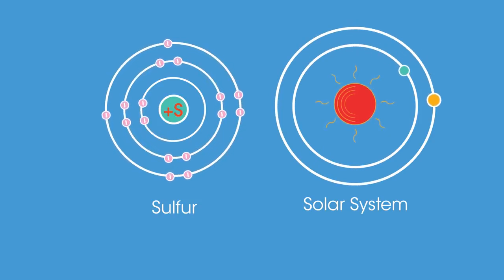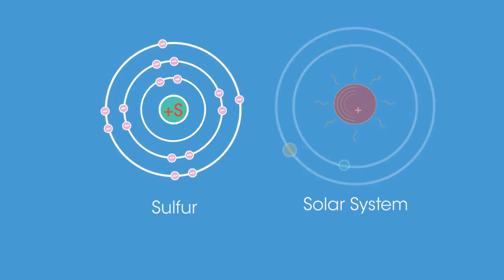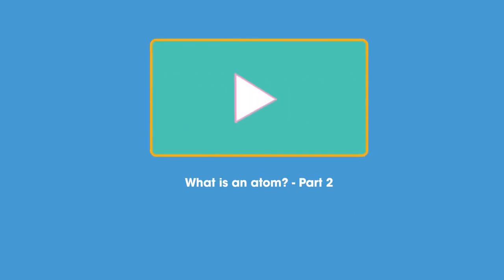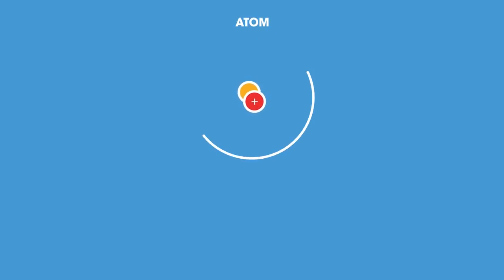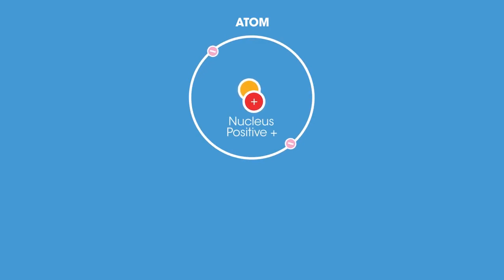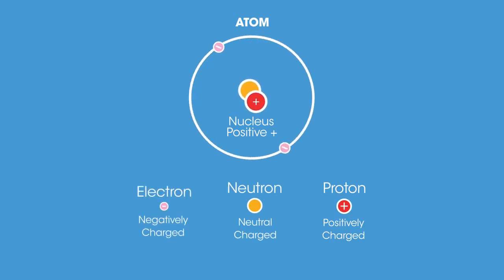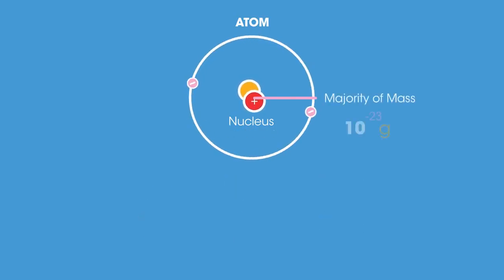In other words, electrons orbit the nucleus similarly to how planets orbit the sun, however electrons can only orbit at specific distances and with specific energies. So there we have the structure of an atom: atoms have a positively charged nucleus made up of positively charged protons and neutrally charged neutrons, which is orbited by negatively charged electrons.